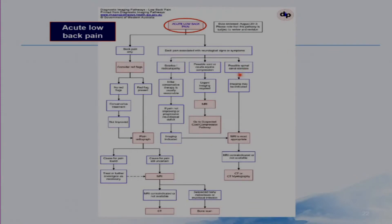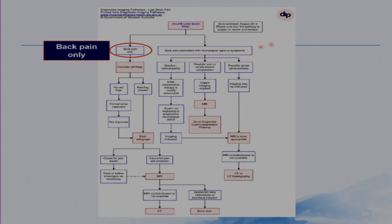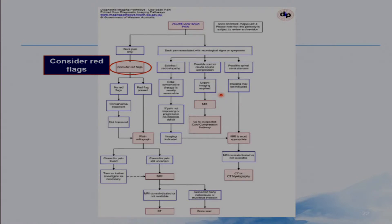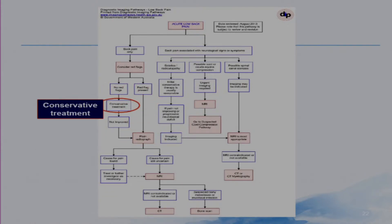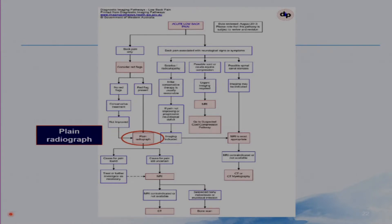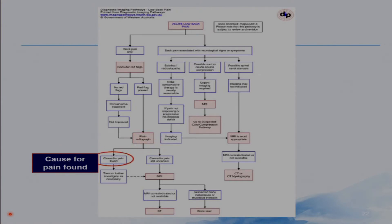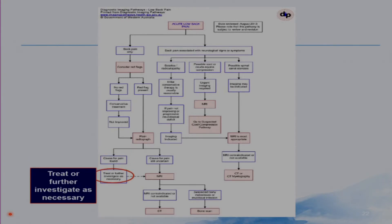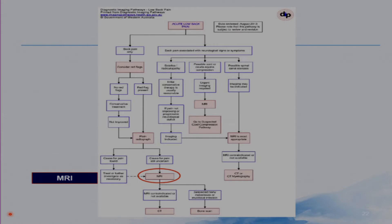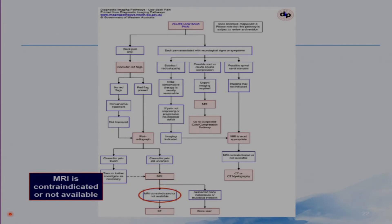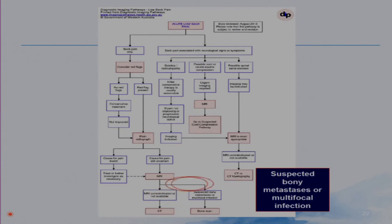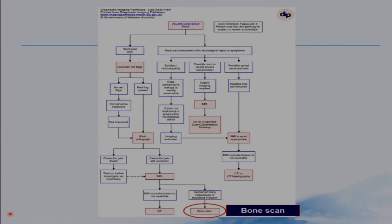From Diagnostic Imaging Pathways, for the clinical scenario of acute low back pain: if there is back pain only without neurological symptoms, consider red flags. If there are red flags, go for a plain radiograph. If there are no red flags, use conservative treatment. If the patient has not improved, proceed to plain radiograph. With the plain radiograph, if the cause for pain is found, treat or further investigate as necessary and may proceed to MRI. If the cause is still uncertain, go for MRI. If MRI is contraindicated or not available, go for CT. If suspecting bone metastases or multifocal infection, go for a bone scan.